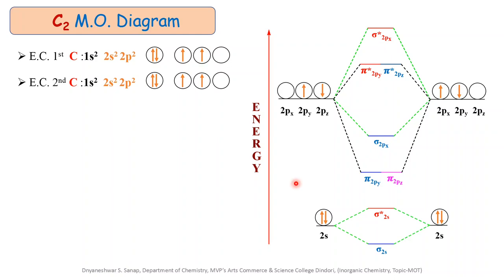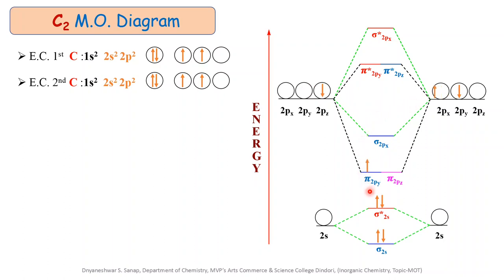All molecular orbitals are filled with electrons from the atomic orbitals according to the Aufbau principle and Hund's rule of maximum multiplicity. The first and second electrons fill the lower energy σ2s bonding molecular orbital. The next two electrons go to the σ*2s anti-bonding molecular orbital. The remaining four electrons from the 2p atomic orbitals fill the lower energy π2py and π2pz bonding molecular orbitals. According to Hund's rule, the third electron gets paired in π2py and the fourth in π2pz.